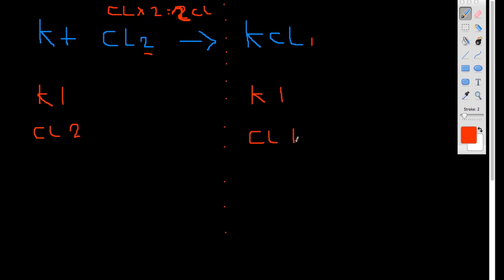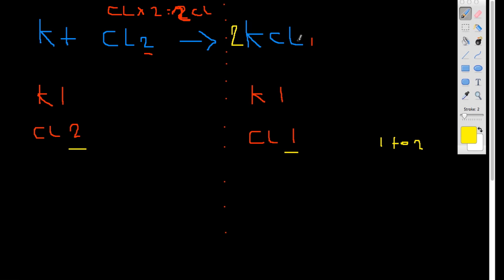So let's look at what we have. On the left side there's 1 K, on the right side there's also 1 K — those are balanced. But on the left side of the dotted line there are 2 Cl, and on the right side there's only 1 Cl. Therefore it's unbalanced. To balance it: what do you do to get from 1 to 2? You times it by 2 — so 1 times 2 equals 2. We write a 2 on the outside of KCl. You can't write it as a subscript, so you write it as a coefficient on the outside.